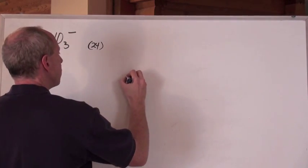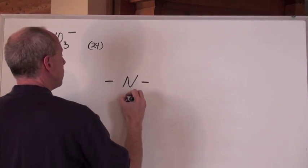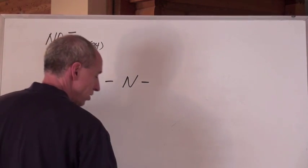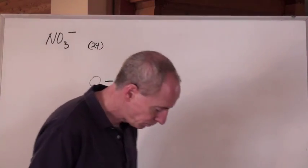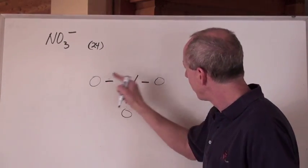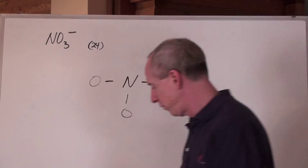Hey, so what are we going to do? All right, well, we're going to take nitrogen. We're going to bond three oxygens to it because that actually just kind of sounds right, doesn't it? Now, look, that's 2, 4, 6, and we need 24. So here we go.